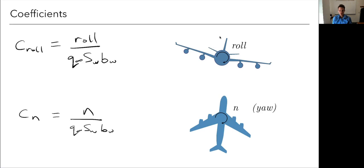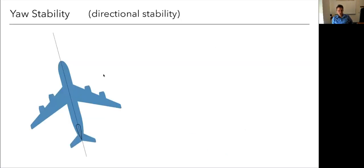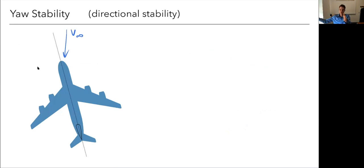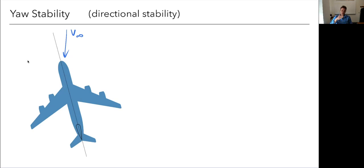Now we want to look at stability criteria first for yaw, then for roll. Imagine the airplane is faced along a dashed line, but the free stream wind speed is coming at an angle — this can happen easily when there's a crosswind. A breeze comes along and now the total wind vector is coming in at an angle, creating a side slip. This isn't desirable, and we'd like the aircraft to have stability so it reorients itself rather than continuing to fly in a side slip.